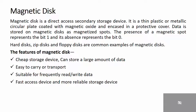Magnetic disk is a direct access secondary storage device. It is a thin plastic or metallic circular plate coated with magnetic oxide and encased in a protective cover. Data is stored in a magnetic disk as a magnetized spot. The presence of a magnetic spot represents bit 1 and its absence represents bit 0.